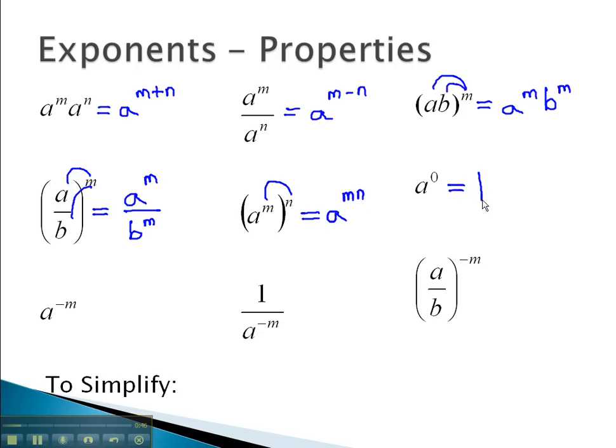Anything to the 0 is always 1, as this means the factors have divided out. A negative exponent moves the a to the m to the denominator, now with a positive exponent. Similarly, if the negative exponent's in the denominator, it moves to the numerator. Or if the negative exponent is on a fraction, the fraction will flip over, making the exponent positive.